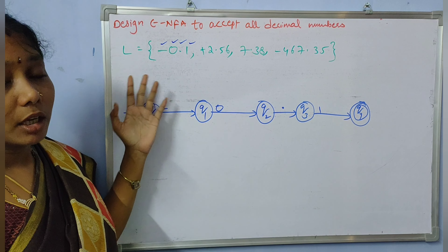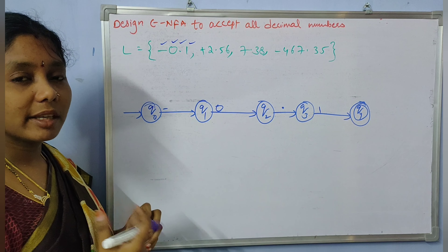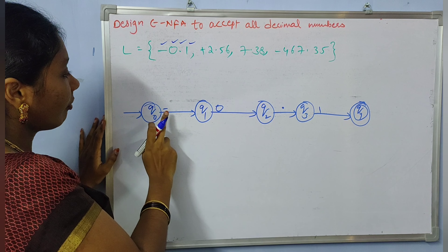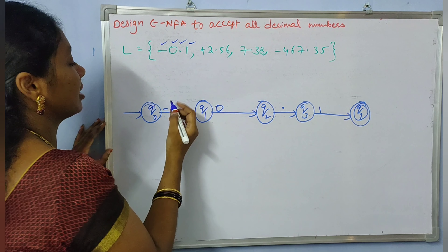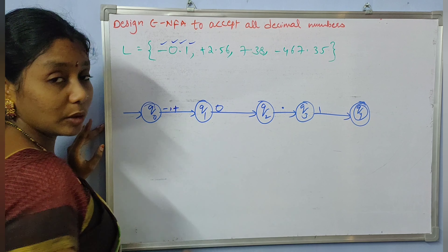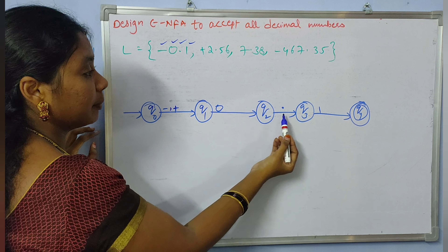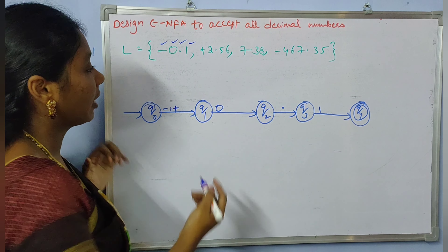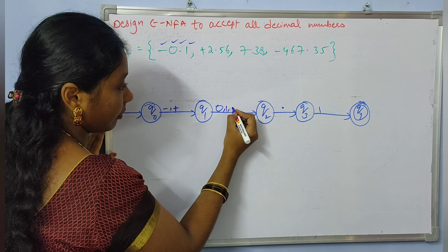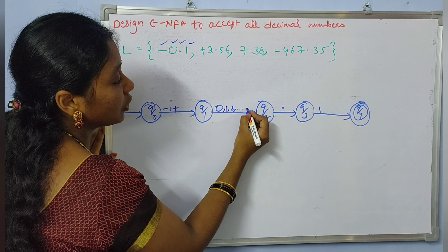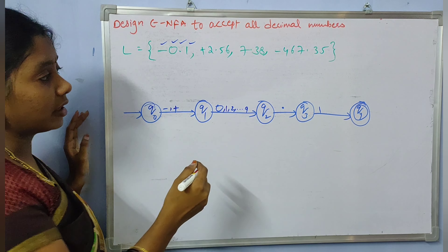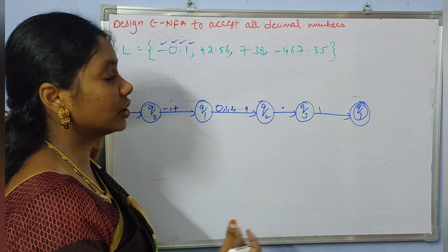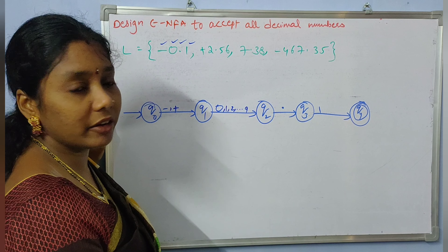We need to make it accept all kinds of decimal values. You may have a minus sign or a plus sign, so you can write plus also here. Before the decimal point you may have 0, 1, 2, and so on — any kind of digit from 0 to 9. Similarly, after the decimal point you may also have digits like 0, 1, 2, and so on up to 9.